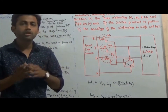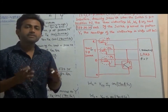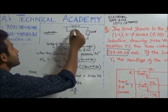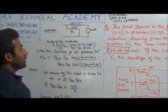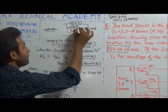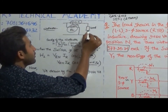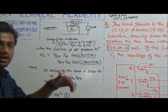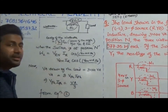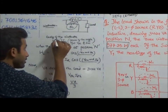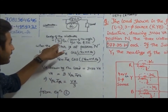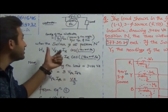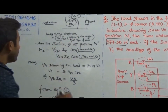To solve this question, we need basic knowledge of watt meters and phasor diagrams. The watt meter consists of a current coil and a potential coil. The potential coil is connected across the load and the current coil is connected through the load. The reading of the watt meter is given by the voltage of the potential coil times the current through the current coil times the cosine of the angle between these two quantities, VPC and ICC.